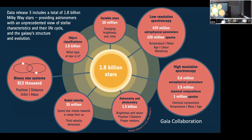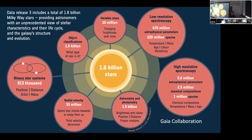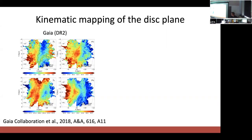Gaia has given us 1.8 billion stars, including solar system objects and quasars, but I'm mainly interested in the stars. It provides astrometry — position on the sky, parallax for distance, and proper motion — for about 1.5 billion, giving 5D information. The missing sixth dimension is radial velocity, which we only get for about 33 million. Those 33 million stars have full six-dimensional phase-space information, and the 6D sample has been particularly exciting. Back from Gaia DR2 there were only 7 million, but it gave us the first real opportunity to start mapping kinematics across the disk of the Milky Way.